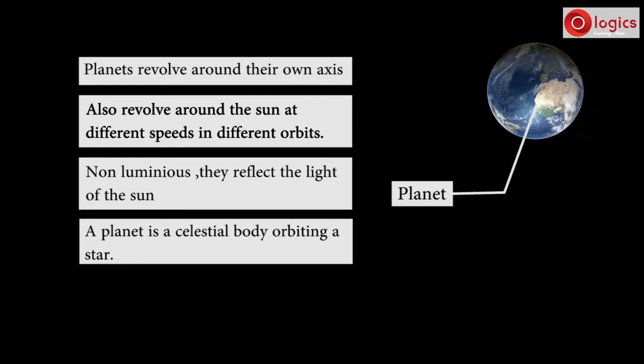A planet is a celestial body orbiting a star. Earth is a planet because it's a celestial body orbiting sun.